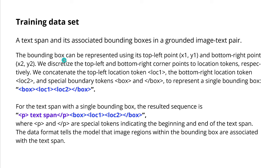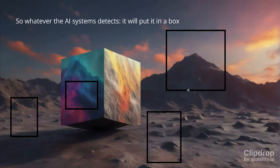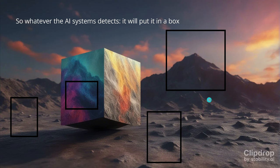Let me explain the bounding box format. You have a text span and its associated bounding boxes — it's an image-text pair. For the bounding box, you have the top-left corner point (x1, y1) and a bottom-right corner point. You have location one, location two, and 'box' and 'end of box' tokens. If you add text to this box, you put a specific token, then your text span — for example 'image of a woman' — and the box. That's all there is to it.